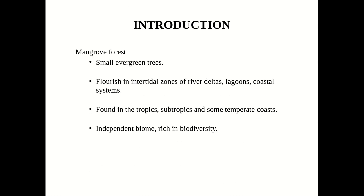Introduction. Firstly, I want to ask: what is a mangrove? Mangroves are small evergreen trees that flourish in the zones of river deltas. They provide a variety of ecological services for human beings, such as protection of coasts, pollutant absorption, water purification, and many more.